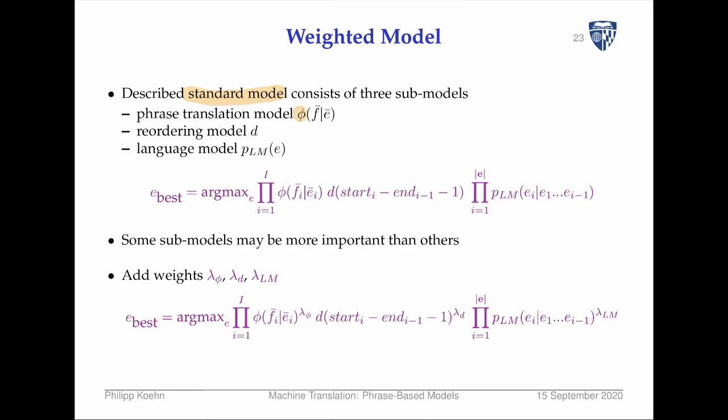Phrase translation probabilities, the reordering model — which was already not really a probabilistic model — and a language model. If you spell it all out, you have argmax over E, the best sentence E.